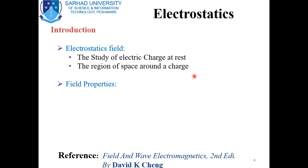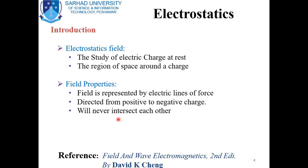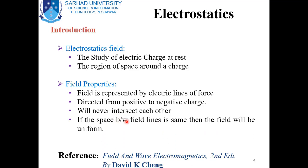Let's discuss some properties of the electric field. The electric field is represented by electric lines of force, which means that if we place a point charge on these lines, it will experience a force of attraction or repulsion. These lines are directed from a positive charge to a negative charge, so the electric field is a vector field. The electric lines of force will never intersect each other, and if the space between the field lines is uniform, the field will be uniform. Remember that these electric lines of force are imaginary lines but they represent a real field.